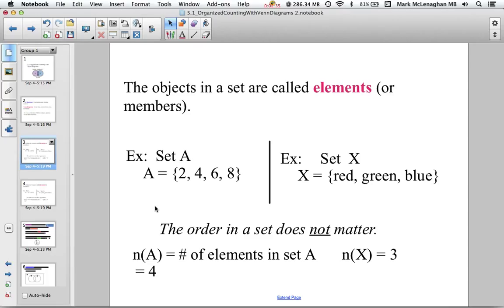Speaking of operators, we can use the notation n(A), with brackets around the A, equals the number of elements in A. So n(A) equals 4, n(X) equals 3. Sometimes we just need to know how many elements are in the set rather than the actual elements themselves.